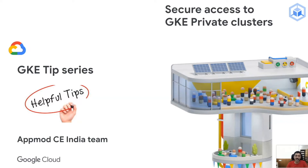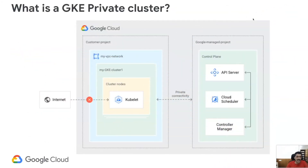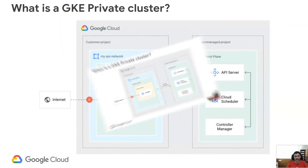In this specific chapter, we will focus on how to secure access to a GKE private cluster. A GKE private cluster allows you to set up a cluster in an isolated mode with restricted access. You have a customer project with your VPC network where you host the worker nodes, and the master node running the GKE control plane runs in a Google-managed project with its own special VPC. We restrict access to both the worker nodes and the master nodes.